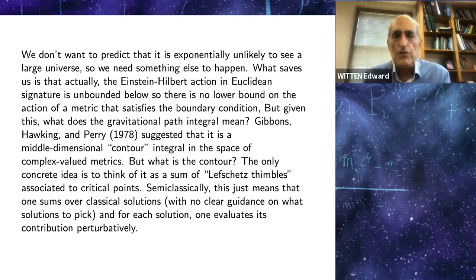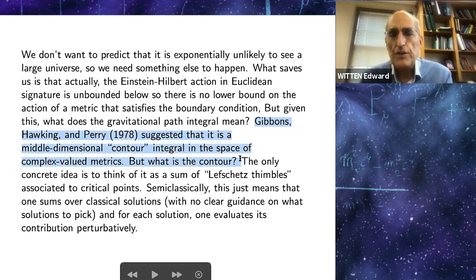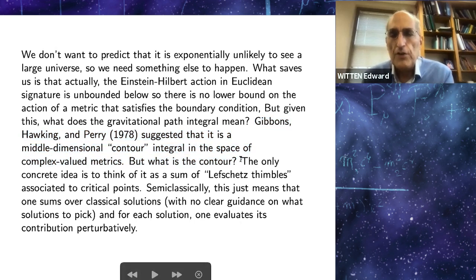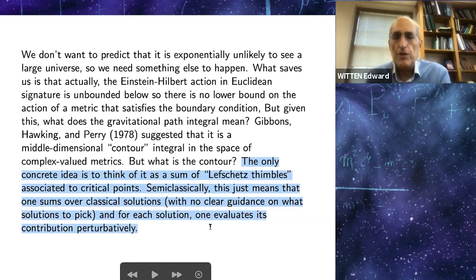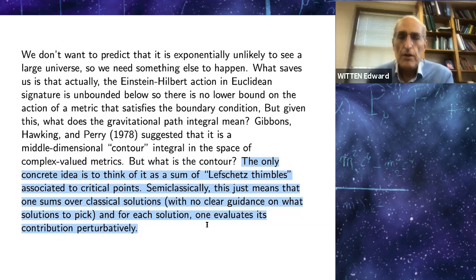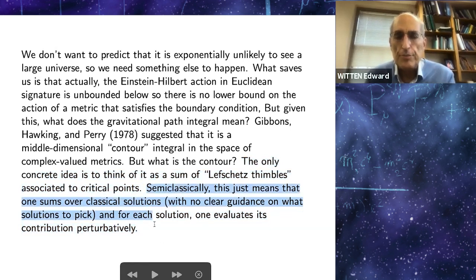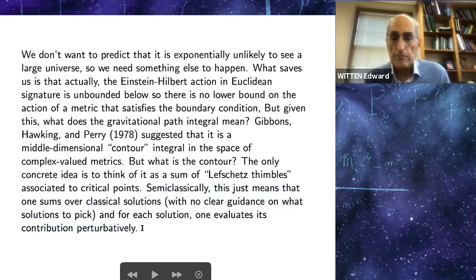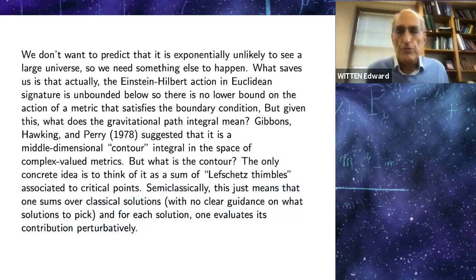Since there's no lower bound on the action, what does the gravitational path integral mean? Gibbons, Hawking, and Perry suggested that it's a middle-dimensional contour integral in a space of complex-valued metrics. But what's the contour? There's no good answer to that question to this day. The only concrete idea is to think of the contour in the Lefschetz thimble language as the sum of Lefschetz thimbles associated to critical points. Semi-classically, that just means you evaluate the path integral by summing over classical solutions — with no clear guidance on what solutions to pick — and for each solution you evaluate its contribution perturbatively, making a Wick rotation in field space so that you can do the perturbation theory.